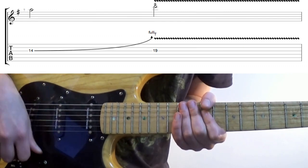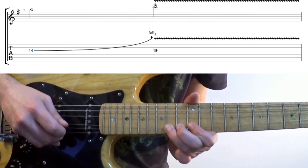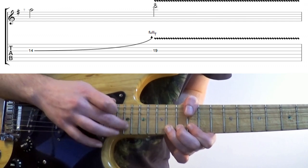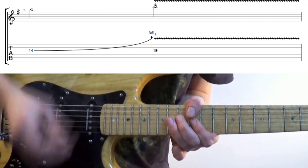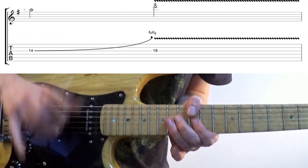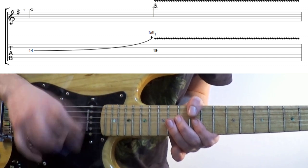If we bend this A on the G string up to B, and tap on the 19th fret, we get our classic Billy Gibbons from ZZ Top tapping lick, what Josh Homme from Queens of the Stone Age would call tasteful tapping.